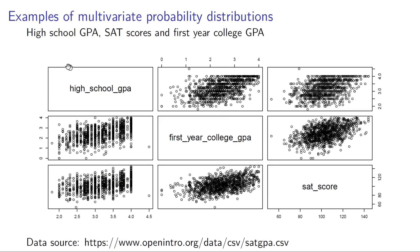The next example looks at whether there is a relationship between SAT scores of high school students and their first-year college GPA. This scatter plot shows those two variables and it looks like there is some sort of relationship. You might also wonder: is there a relationship between high school GPA and first-year college GPA, or between high school GPA and SAT score?